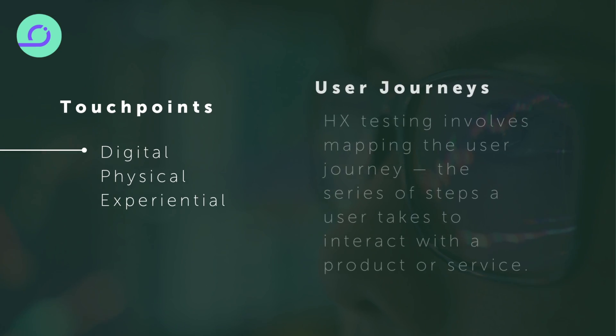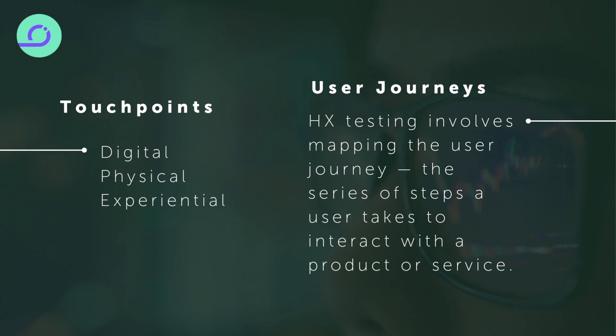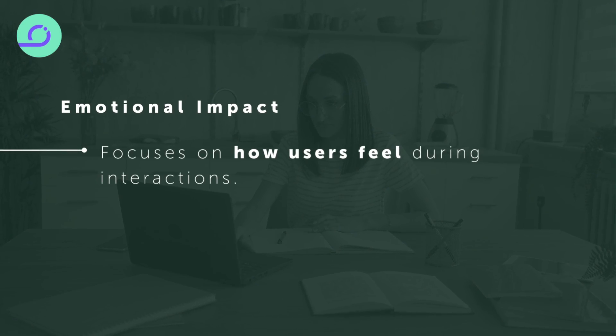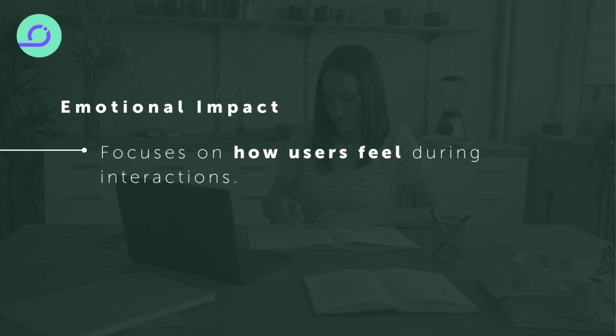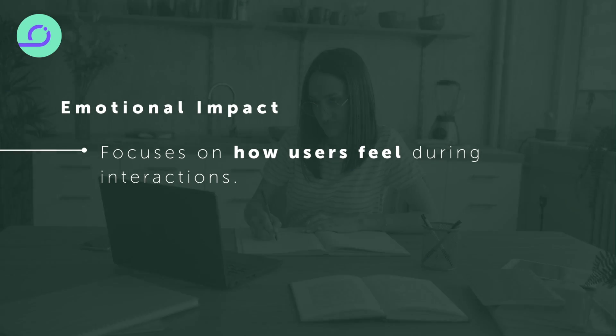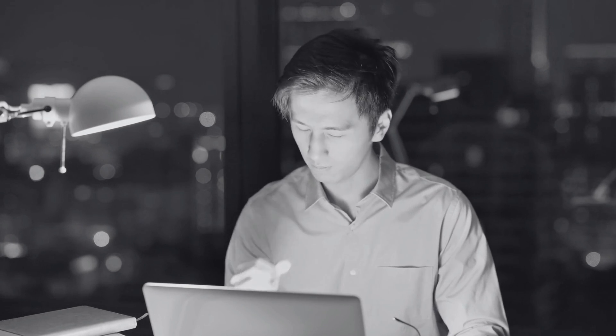Second, user journeys. HX testing maps out the entire series of steps a user takes to interact with a product or service from start to finish. Finally, emotional impact — HX testing pays close attention to how users feel during their interactions. For example, if users feel overwhelmed by too many options in an app, HX can suggest simplifying the interface to create a more positive emotional response.